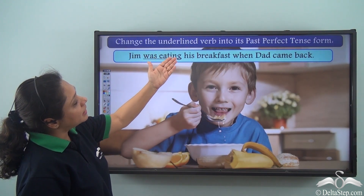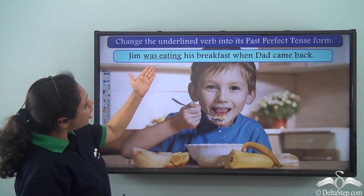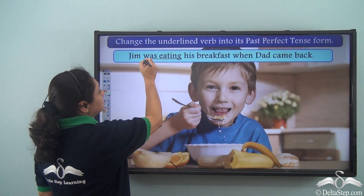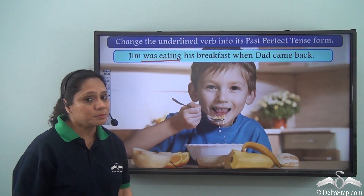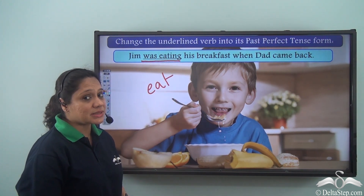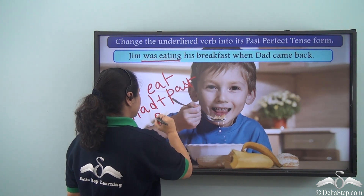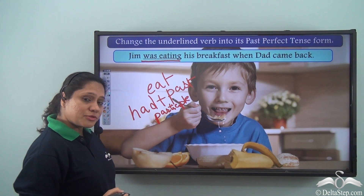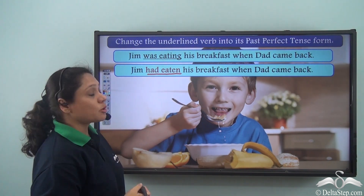Change the underlined verb into its past perfect tense form. The sentence is: Jin was eating his breakfast when dad came back. The underlined verb is was eating. The base verb is eat. The past perfect tense form uses had with the past participle form of the base verb. So the answer is: Jim had eaten his breakfast when dad came back.